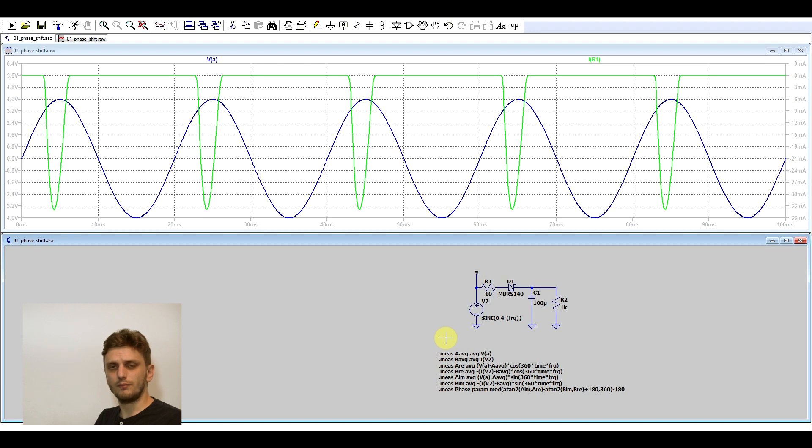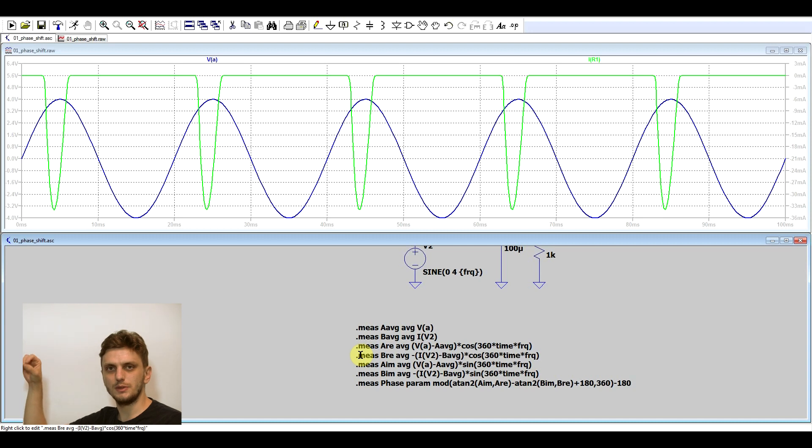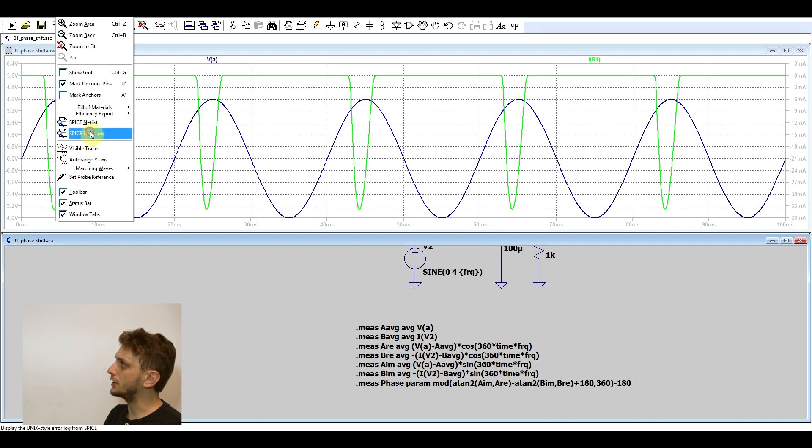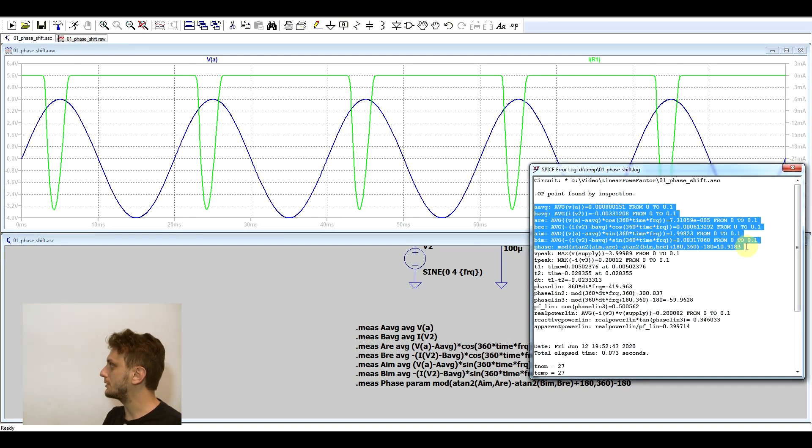So a better way to extract the phase shift is to rely on a bit of complex mathematics. What I got here is a set of measure statements that are basically applying a Fourier transform to the set of points forming our waveforms to extract its various frequency contents. It's doing this to extract both the real and the imaginary part of the function that defines this waveform, and then we can process these functions to extract phase shift. So basically the first six lines are extracting the imaginary part and the real part of the voltage and the current, and then in the final line it's using the four quadrant arc tangent function to determine phase shift, and then subtracting one phase shift from the other, and basically doing the same thing that we did previously. So if we run this simulation and look at the error log, we can see the new measured statements that we've added. So we see the way in which the real part and imaginary part are calculated, and finally we get a phase shift of 10.9 degrees, so 11 degrees.